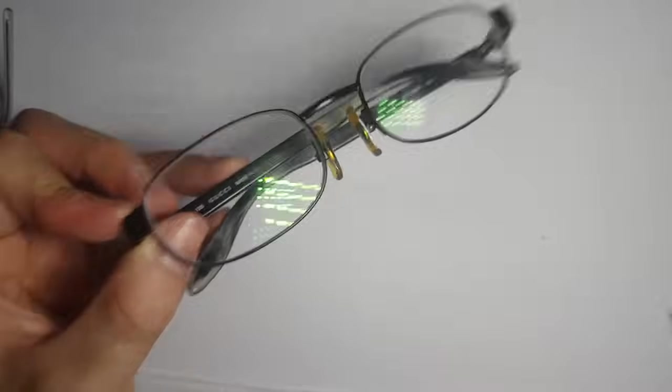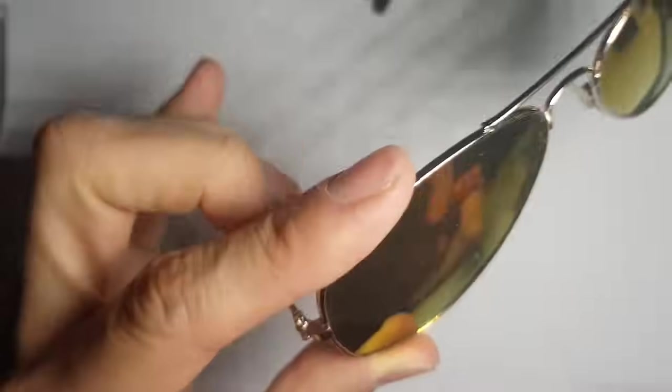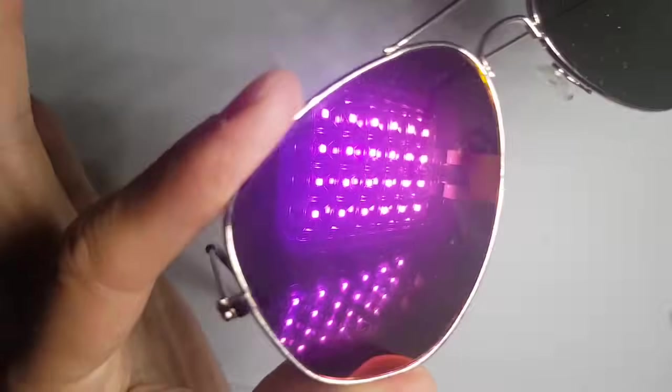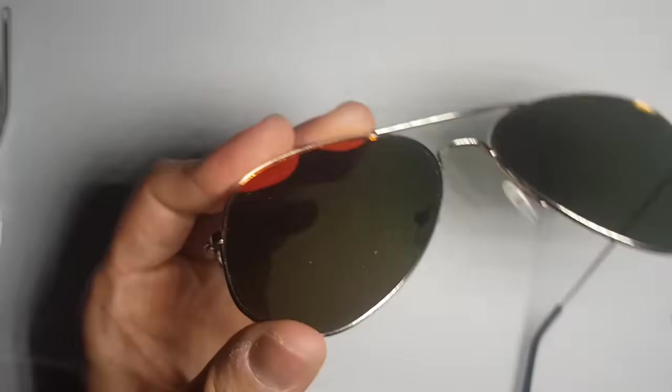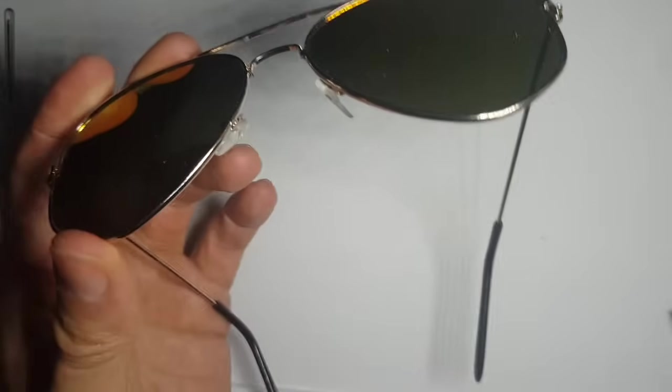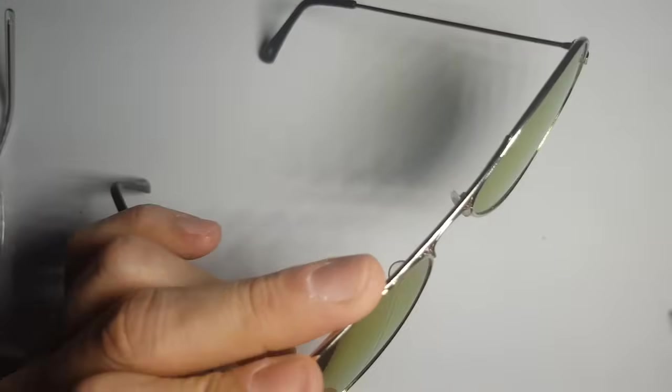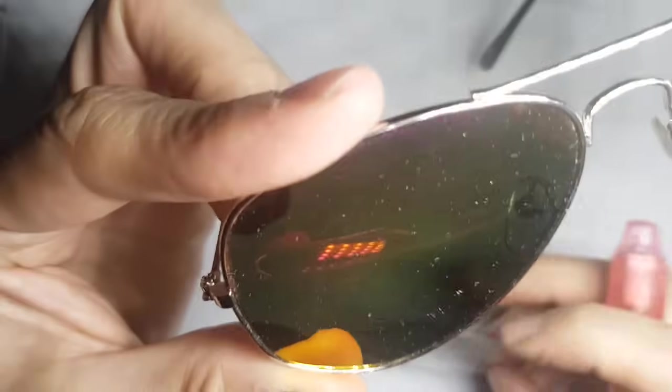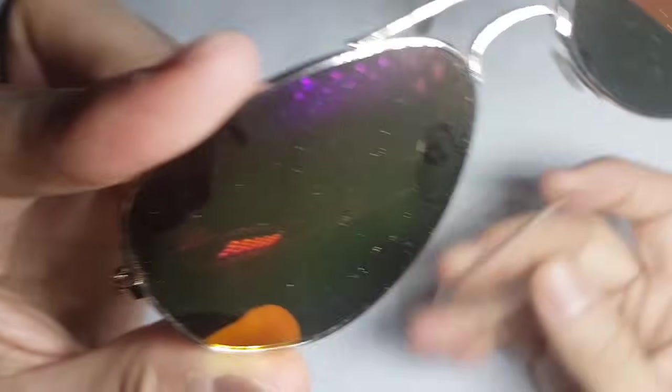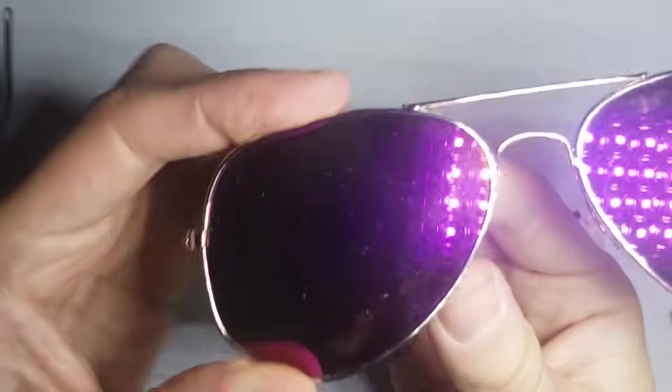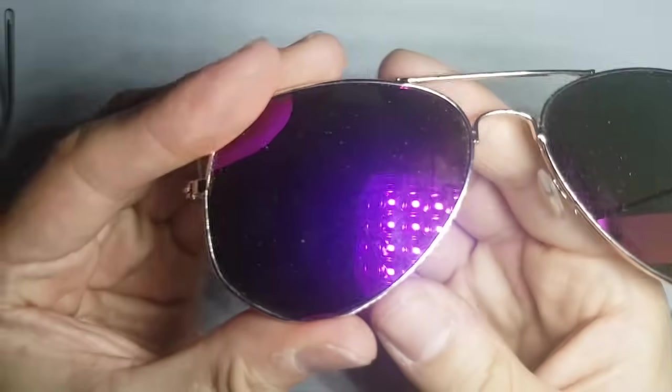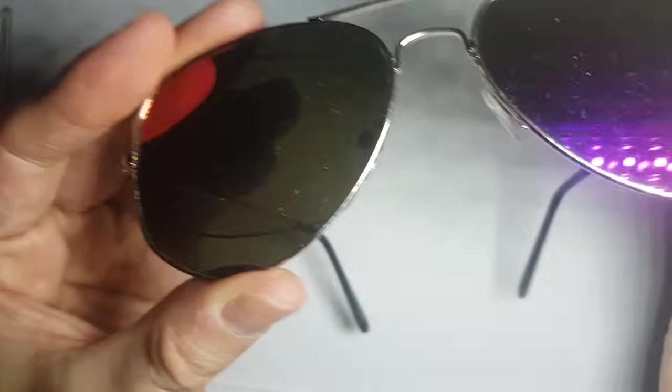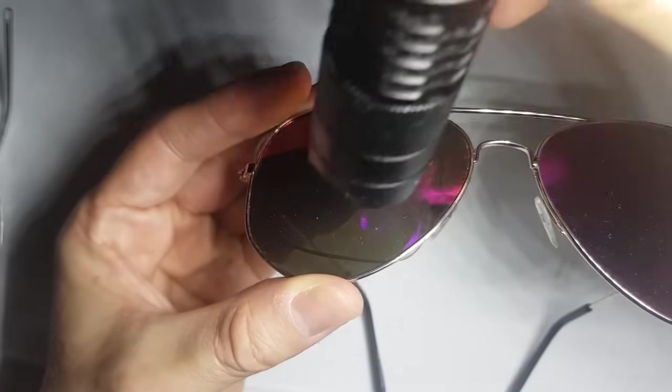This way you can tell these anti-reflex glasses don't have UV protection. Now let's take another pair of glasses. They may seem like common sunglasses. What I'm going to do is the same thing. I'm going to take my photochromatic lens and put them below the sunglasses. This time I'm going to use a more powerful UV light.